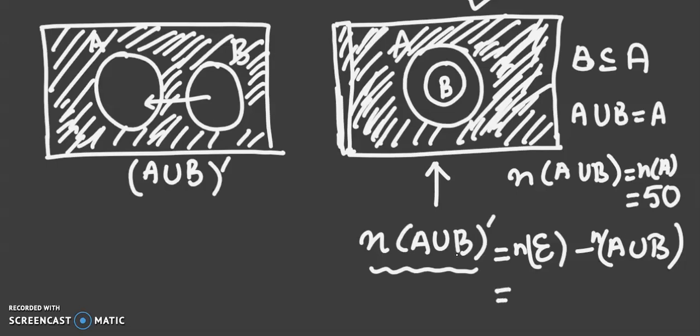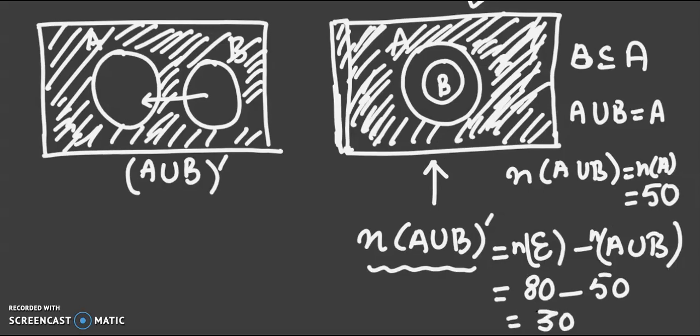Now we already know it is given in the question that the number of elements in universal set is 80. So write here 80 and the number of elements in A union B is 50. So we get 30. So 30 is the greatest number of elements in A union B whole complement.